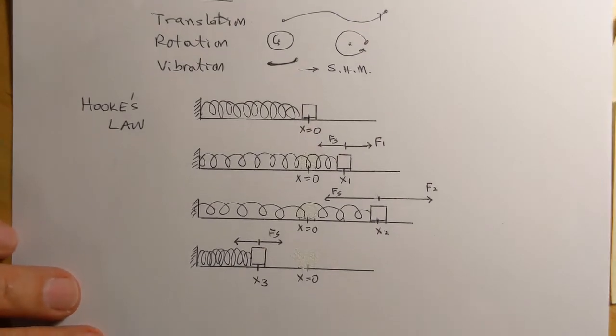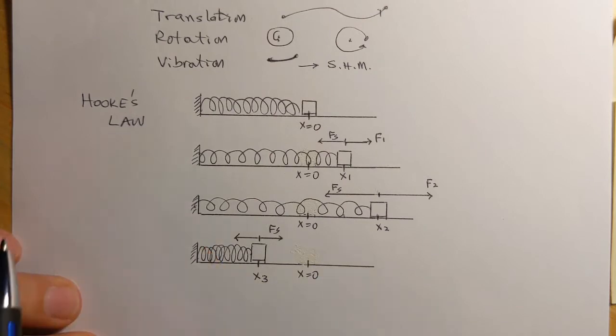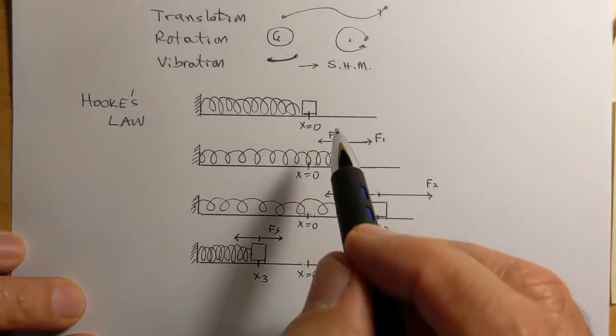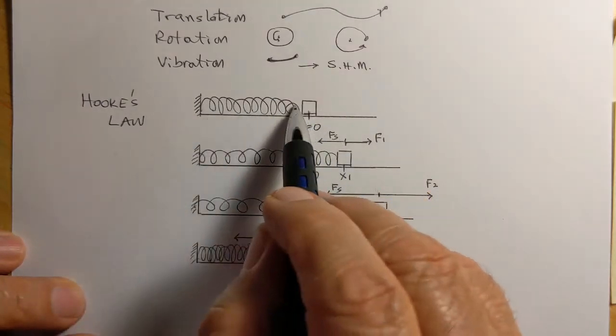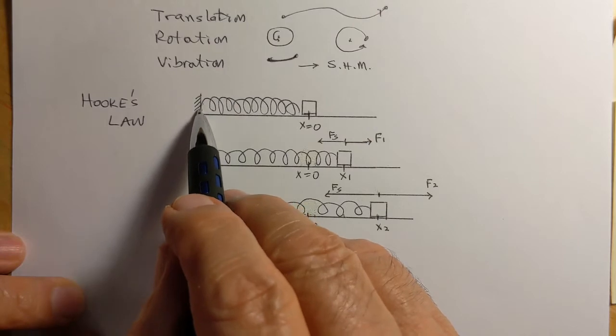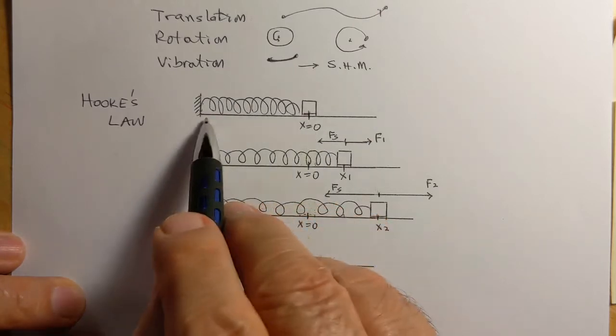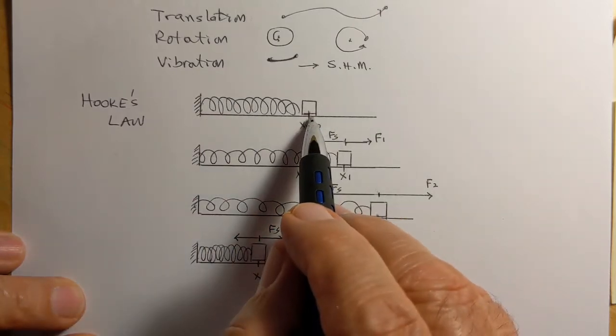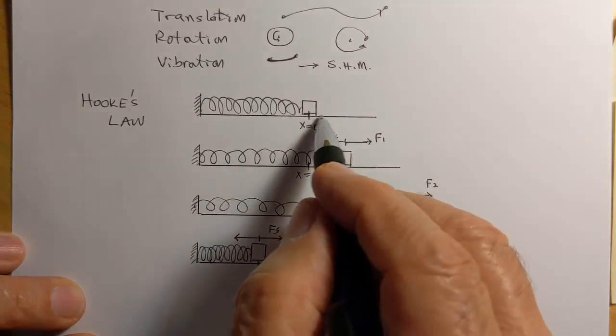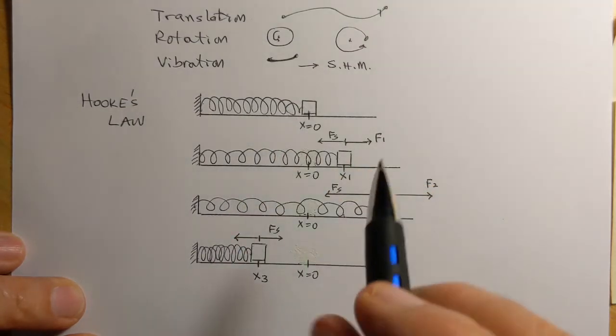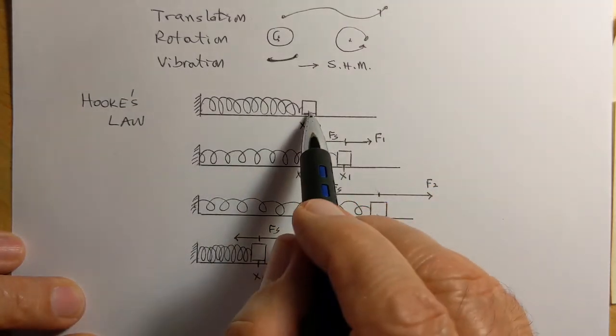Now the first thing to see here is what we call Hooke's Law, and that deals with the forces on a spring. So if we have a spring attached rigidly to a support and it's on a horizontal surface and it's completely frictionless, motion is frictionless.